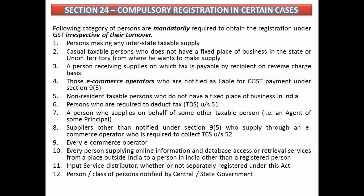Section 24 covers compulsory registration in certain cases. The following categories of persons are mandatorily required to obtain registration irrespective of their turnover: (1) any person who makes interstate supply — from one state to another; (2) casual taxable persons, i.e., persons who set up exhibitions or stalls in different states with no fixed place of business; (3) persons who are required to pay tax on inward supply under reverse charge; (4) e-commerce operators notified under section 9(5); (5) non-resident persons making taxable supplies; (6) persons liable to deduct TDS; (7) agents making taxable supplies on behalf of others.